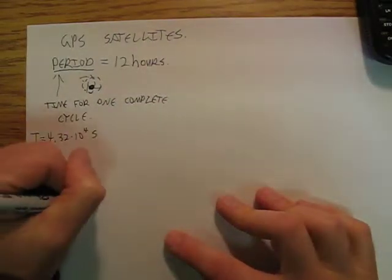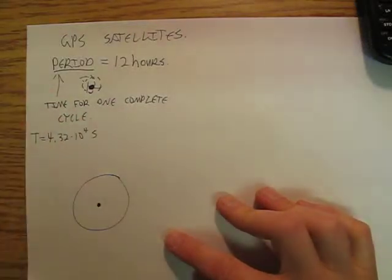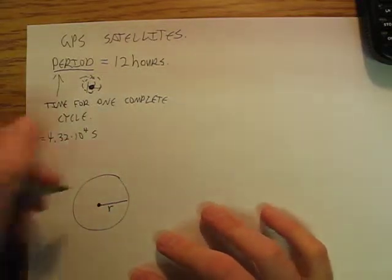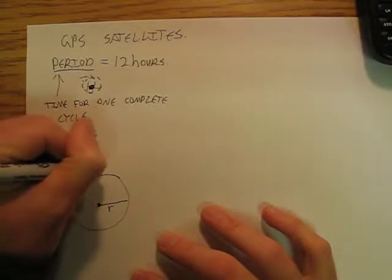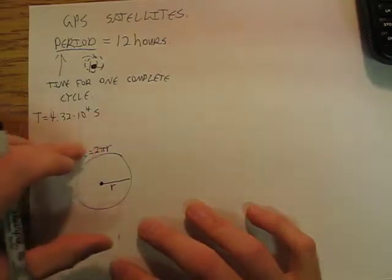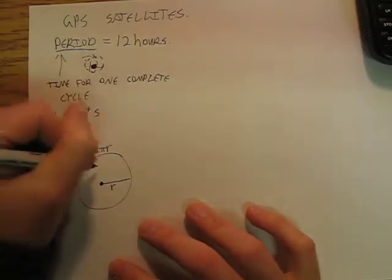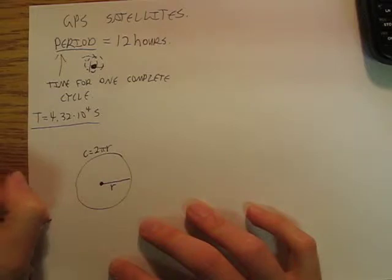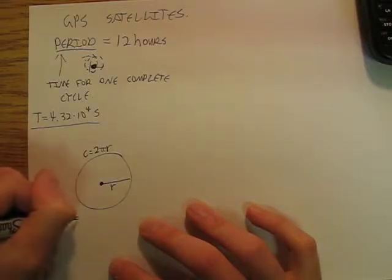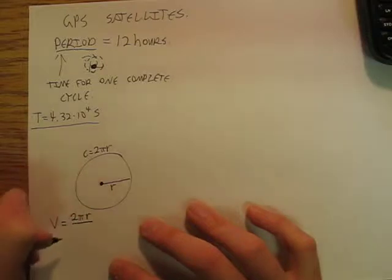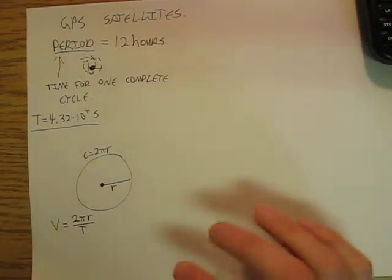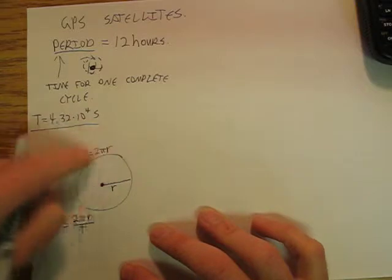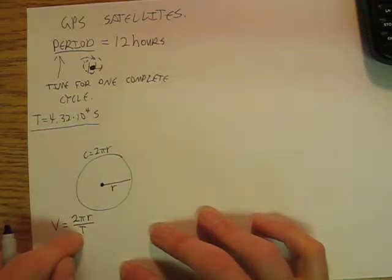We have an orbit — we'll call it a circle — and it's going to have some radius r, and it's going to have some circumference 2πr, and a period T. So we're going to say that the velocity is going to be the distance 2πr divided by the time T. So velocity equals the circumference of the orbit divided by the time it takes to complete the orbit.